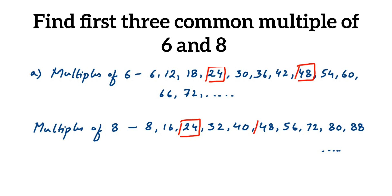Next, forty-eight is the second common multiple, and seventy-two is the third. So we have found the three common multiples. The common multiples of six and eight are twenty-four, forty-eight, and seventy-two. We're going to write this down.